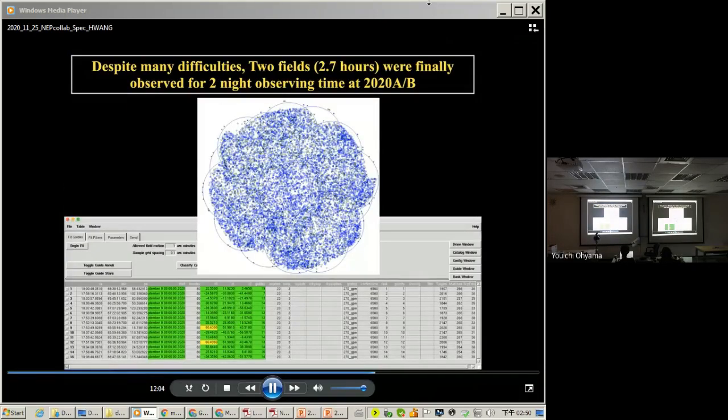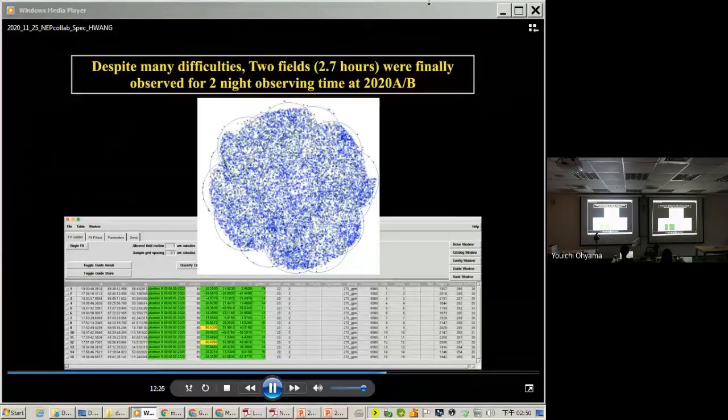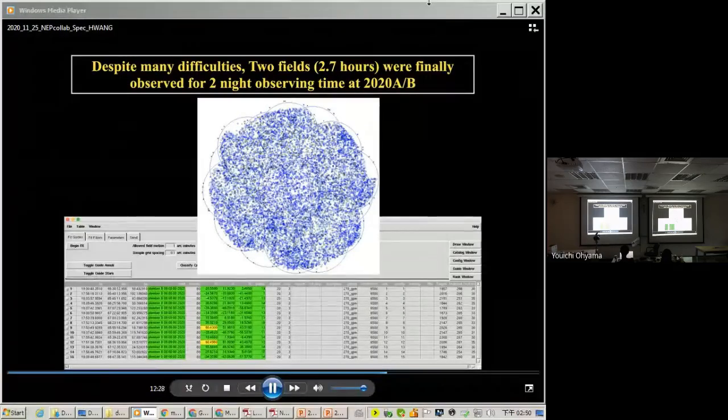So we submit MMT observing time. And this plot shows the number of fields that we submit to proposal. The goal is to cover the NEP wide field in a meaningful way. Despite many difficulties, two fields were finally observed for two nights observing time this year.